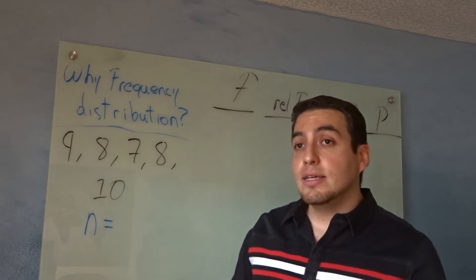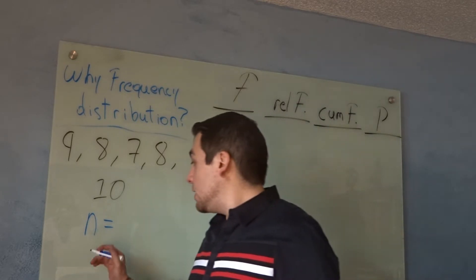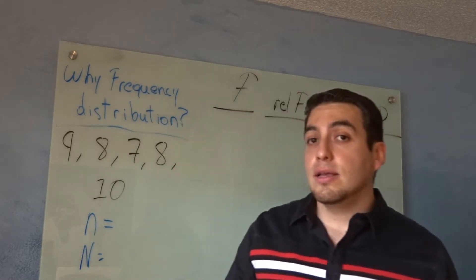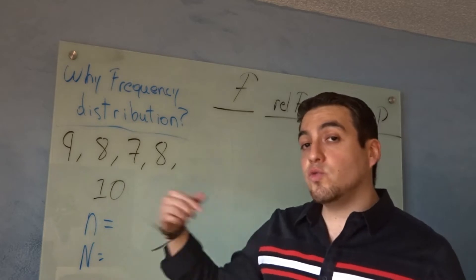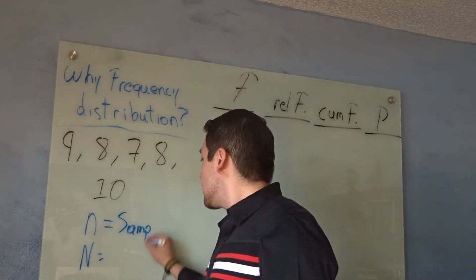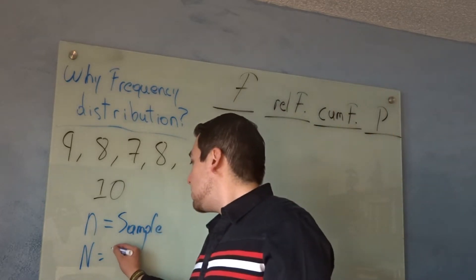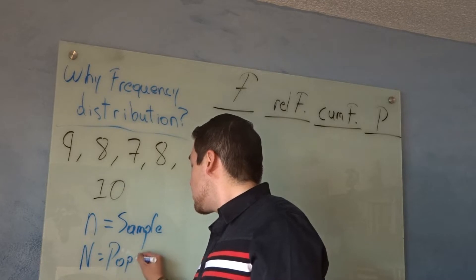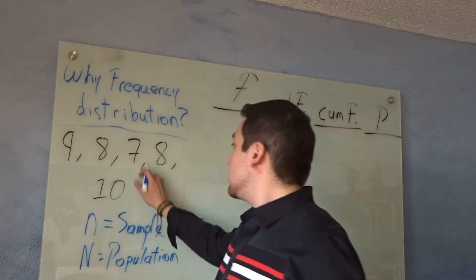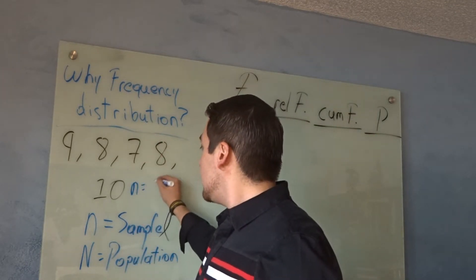First thing: n — in case you don't know, n stands for sample size. There's a difference between lowercase n and uppercase N. Lowercase n is for the sample; uppercase N is for the population. In this example we have five grades, so n equals five.